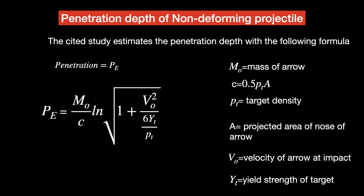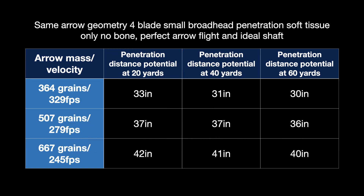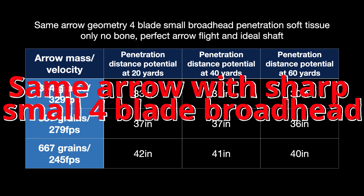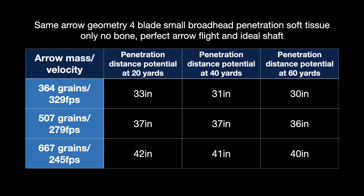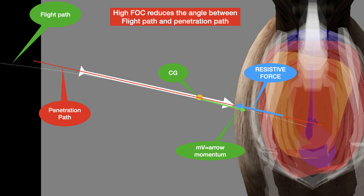The results aren't as different as expected. A 364-grain arrow at 20 yards could deliver about 33 inches of penetration maximum. The 507-grain arrow delivers 37 inches, and the 667-grain arrow delivers 42 inches. At 60 yards, we see an increase in penetration for heavier arrows relative to the lighter arrow — about 30 inches for the light arrow and 40 inches for the heavy arrow. Arguably, all of these arrows could penetrate and kill an elk. So the question is: if all are capable of this penetration, why don't we always see that? It likely comes down to imperfect arrow flight and geometry constraints with lighter arrows.